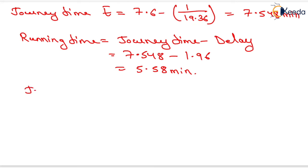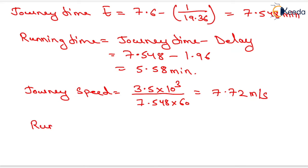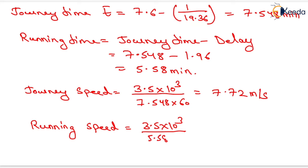Journey speed for south-north equals 3500 m divided by journey time 7.548 minutes into 60 seconds, giving 7.72 meters per second. Running speed equals 3500 m divided by running time 5.58 minutes into 60 seconds, giving 10.45 meters per second. That is the complete solution of this numerical. Thank you very much, students.